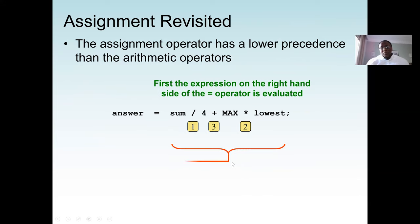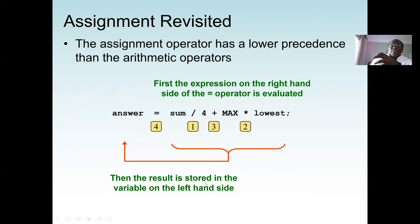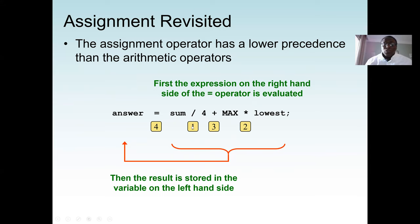The assignment operator has lower precedence than arithmetic operators. The right-hand side of an assignment is evaluated first, then the result is stored. For example: answer = sum / 4 + mass * lowest. We first perform sum divided by 4, then mass multiplied by lowest, then add those results and assign to answer.